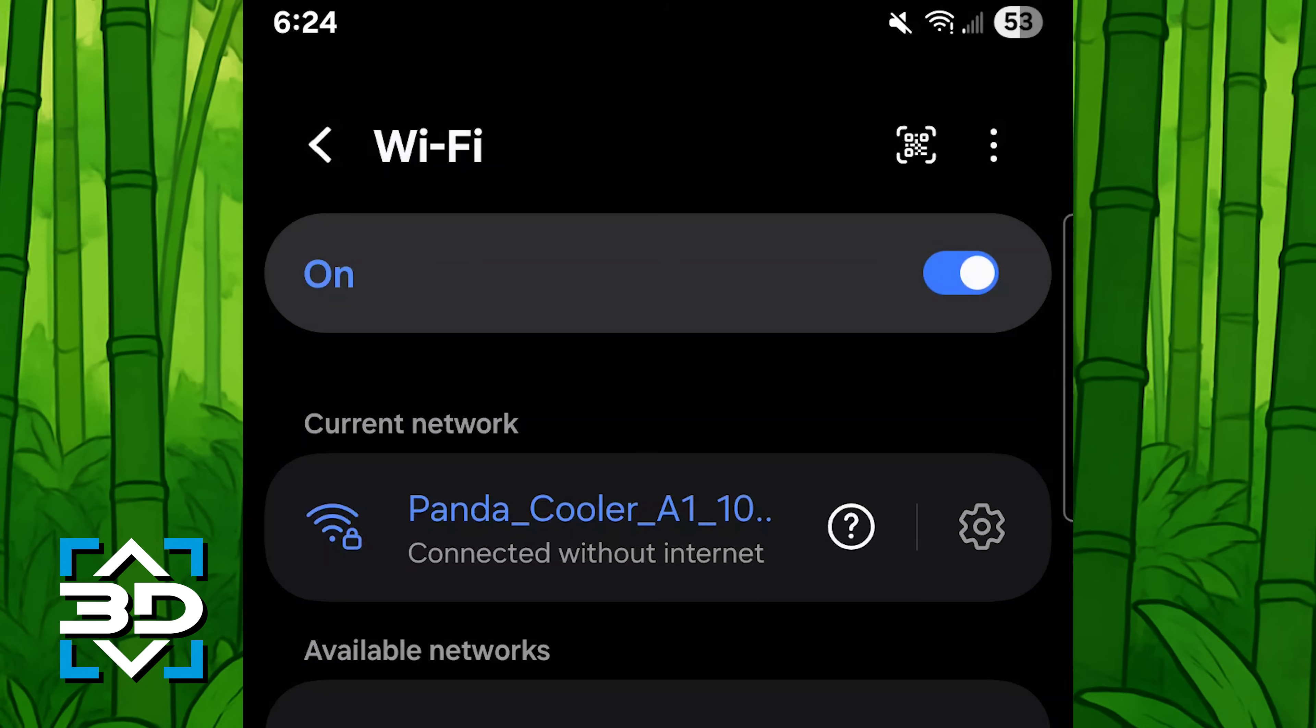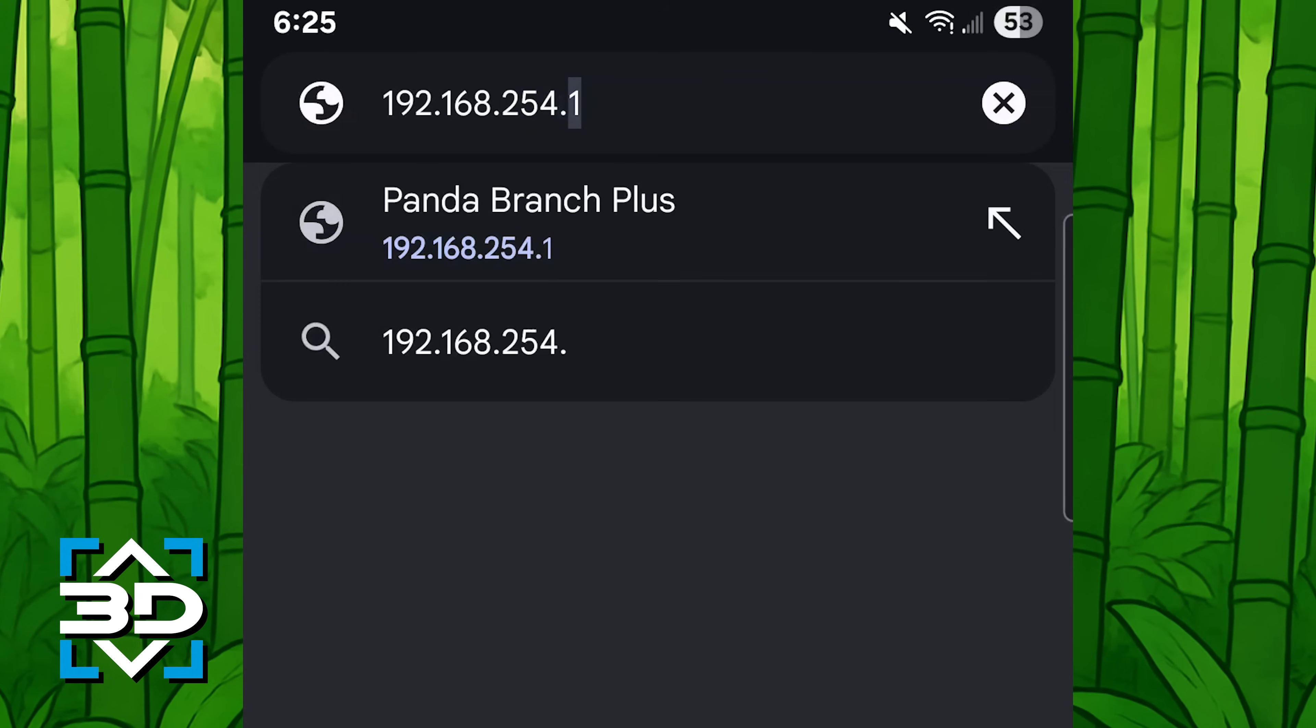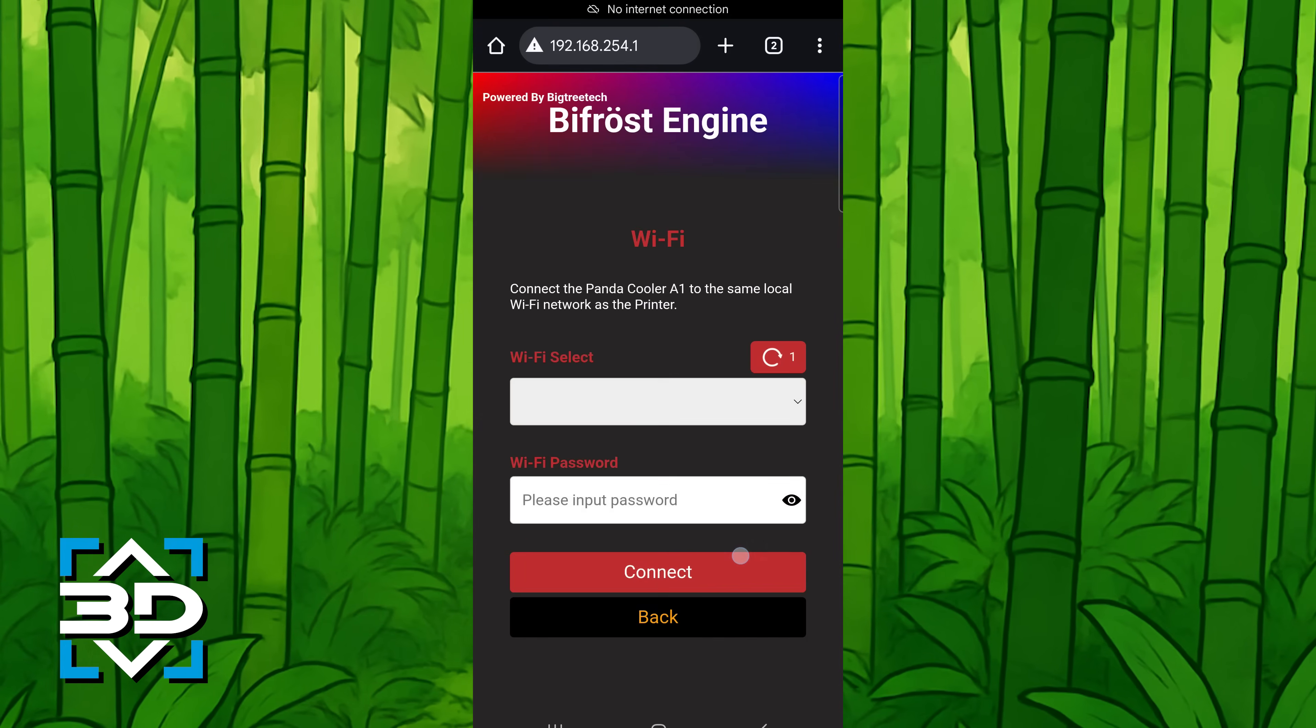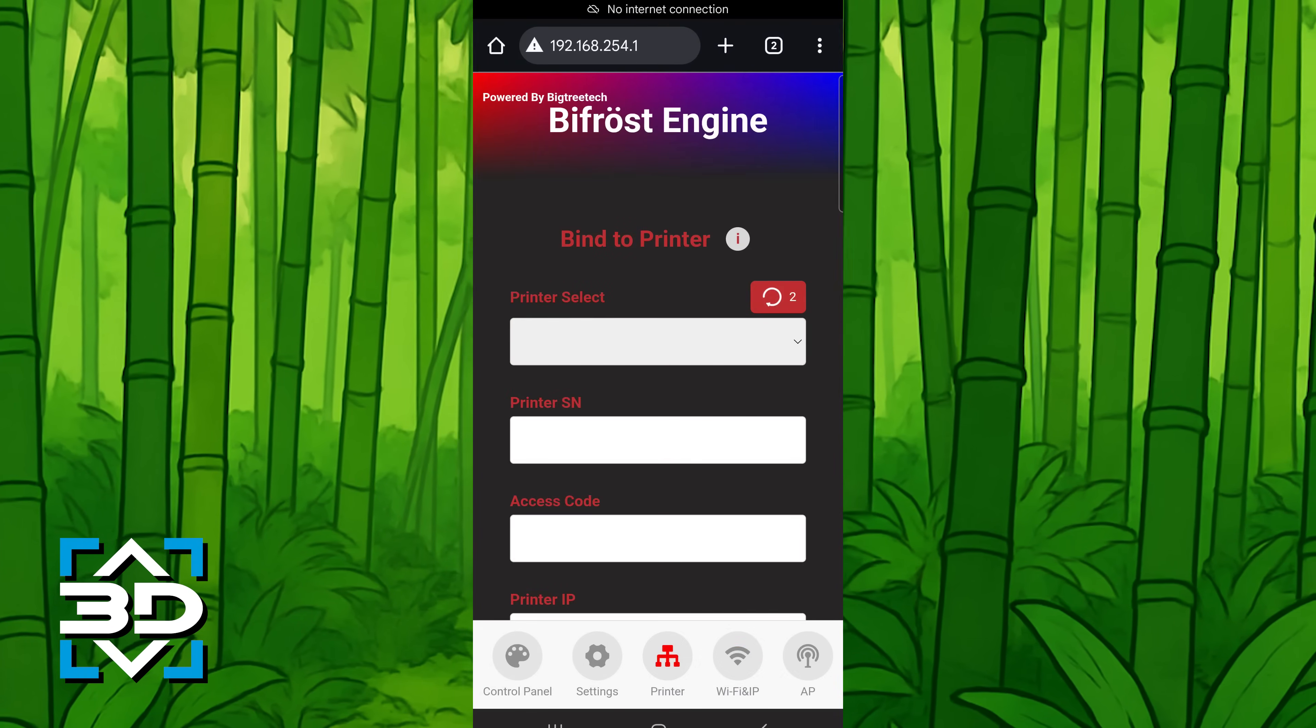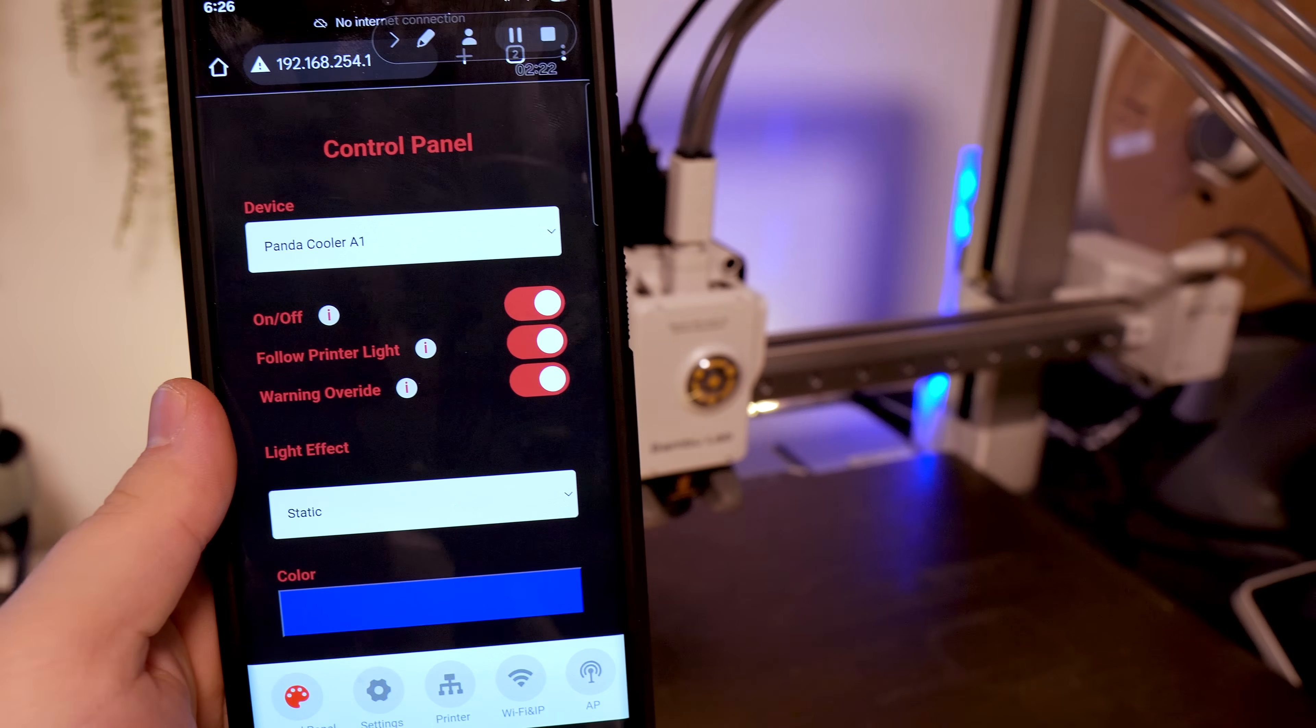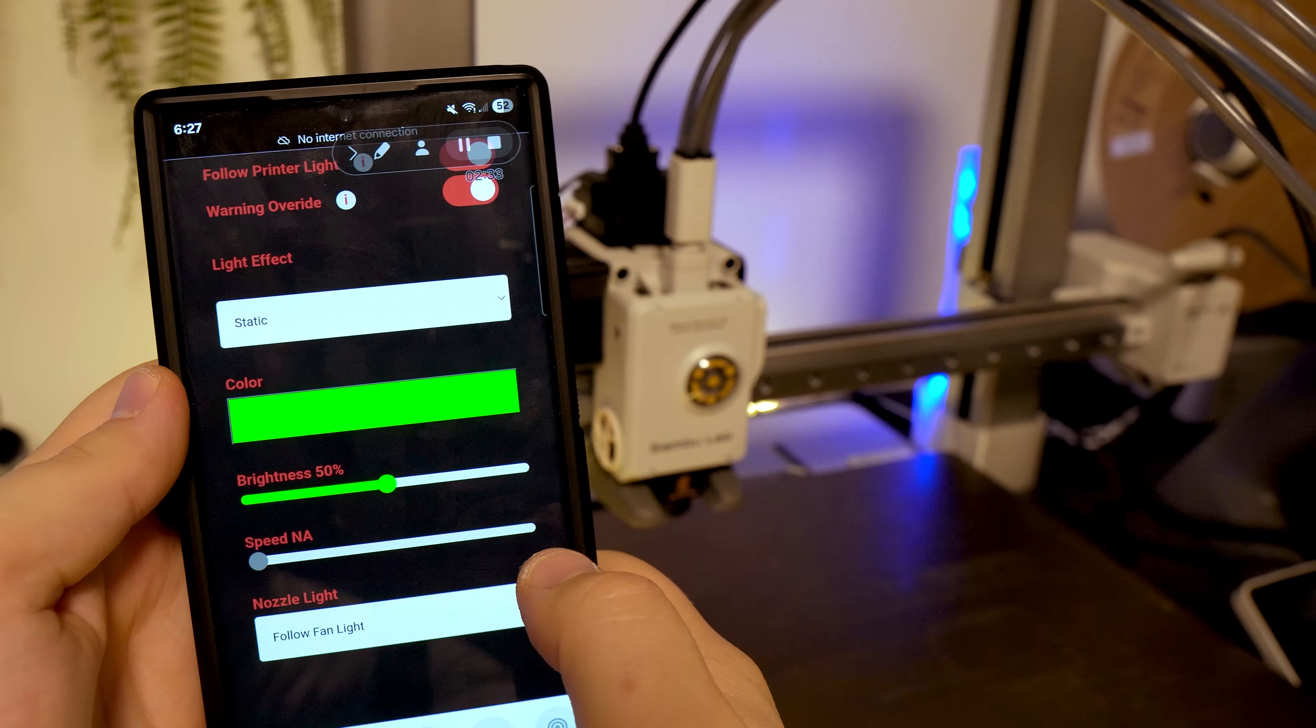Once the printer is on and the device is powered on, you'll have to connect to its Wi-Fi and visit this website to continue with the installation. Once you follow all the protocols, you're able to then select the colors for your cooler fan and the nozzle lights.